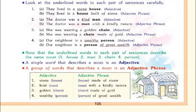Now see the following examples. First, adjective: stone (house) → adjective phrase: house made of stone. Second, adjective: kind (man) → man with a kindly nature. Third, adjective: golden (chain) → chain made of gold. Fourth, adjective: wealthy (person) → the adjective phrase is a person of great wealth.